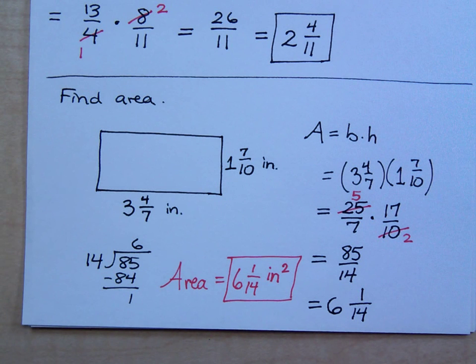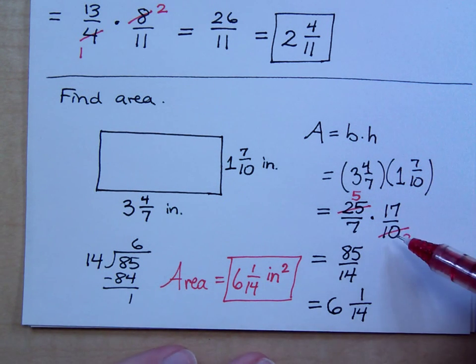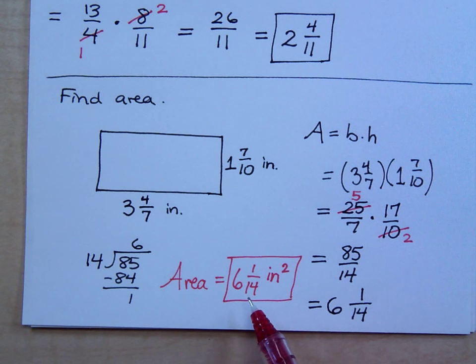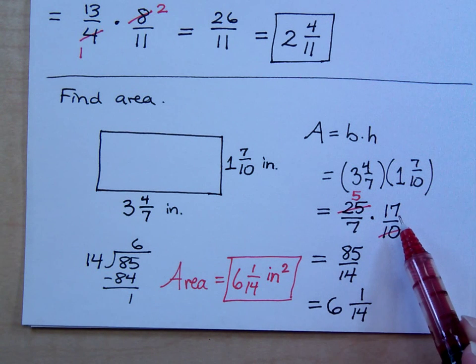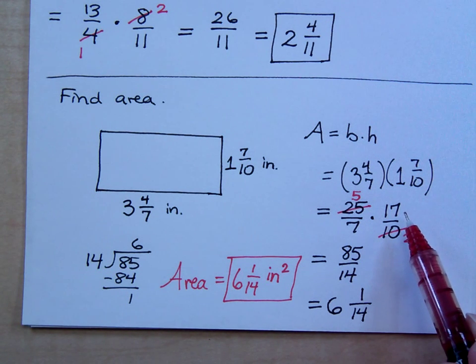Now, please understand that had I not reduced this, I should have still come up with this answer. But you would have had 25 times 17, which sounds a bit on the gross side. That's what, 425?